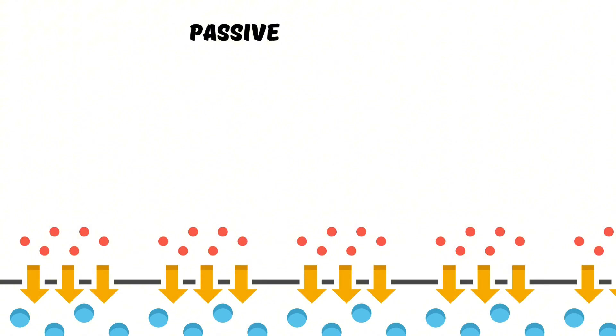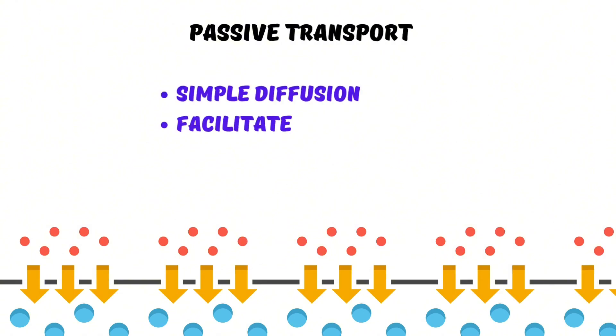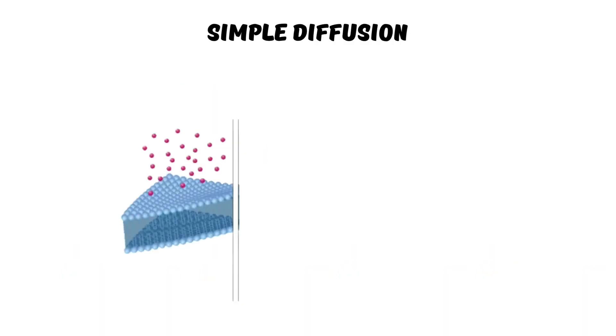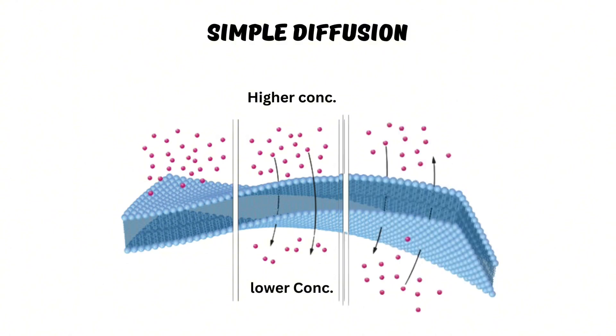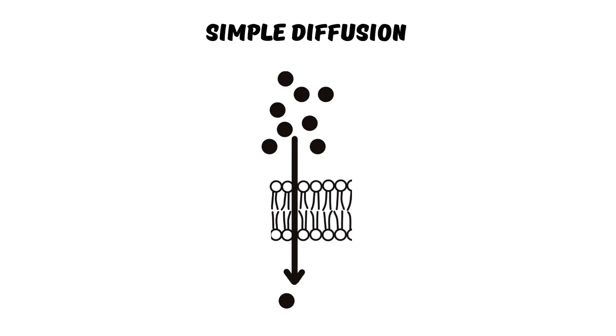There are three types of passive transport: simple diffusion, facilitated diffusion, and osmosis. In simple diffusion, molecules move from an area of higher concentration to an area of lower concentration without the input of energy until equilibrium is reached. Small nonpolar molecules such as oxygen and carbon dioxide can diffuse directly through the lipid bilayer of the membrane.